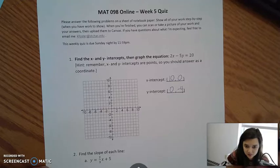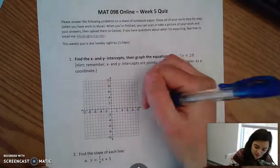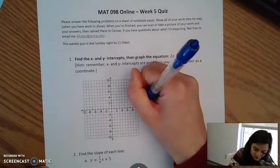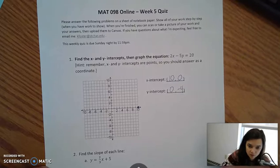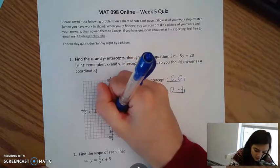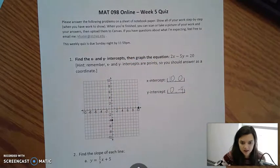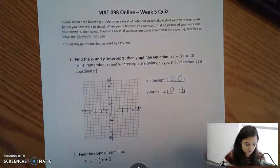After that, it's actually pretty easy to graph because we already have two points. Our first point is our x intercept, which happens at the point 10, 0. We have another point at the y intercept, which is the point 0, negative 4. And after that, we can connect the dots and form a nice line.